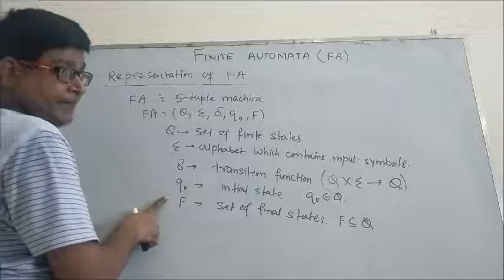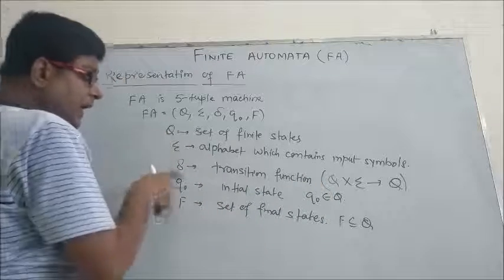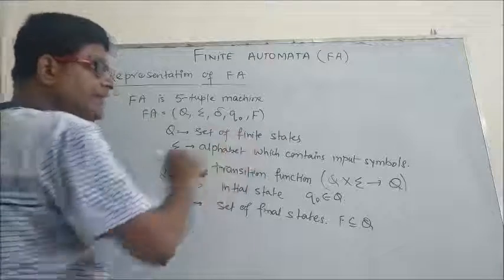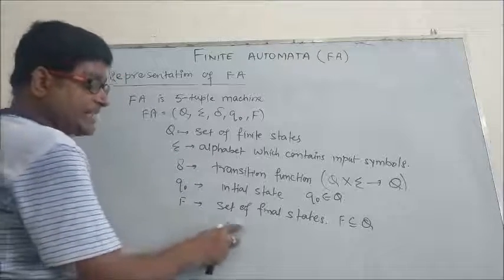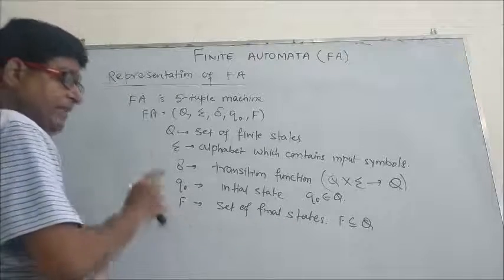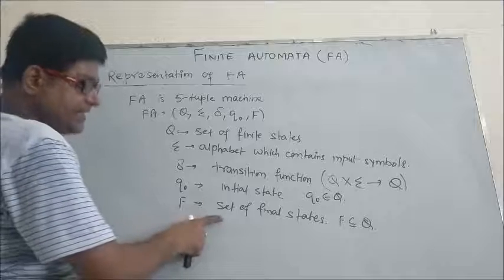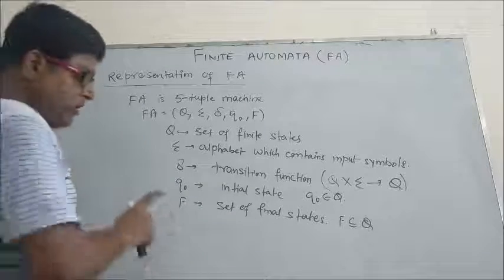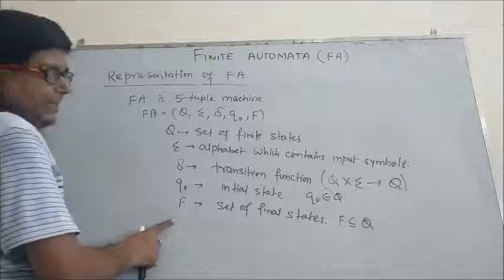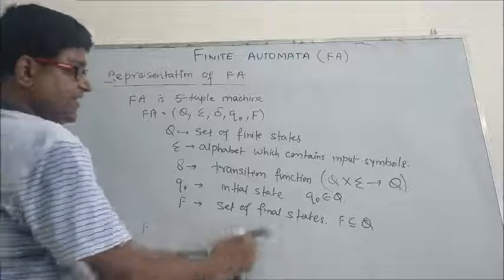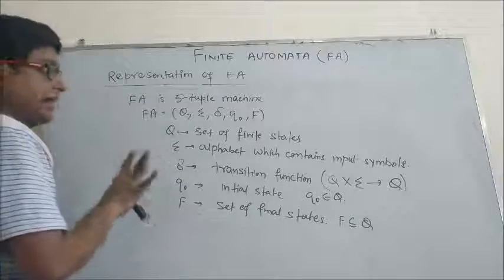The fourth component is q₀, which is your initial state. This initial state must belong to capital Q, because the initial state should be part of the finite state machine. The fifth component is capital F, which is the set of final states. Final state can be one state or more than one state — that is why it is called a 'set' of final states. Remember: you must have exactly one initial state, but you may have more than one final state. The set F must be a subset of capital Q.